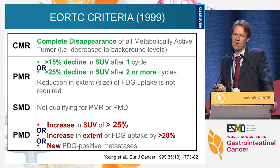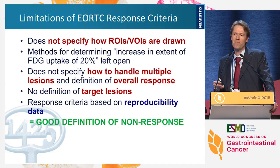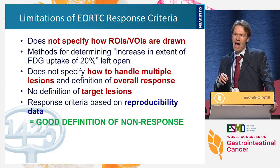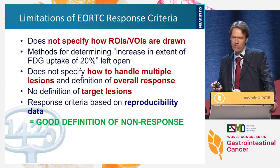Limitations of EORTC criteria include no specifications on how to make your ROIs or volumes of interest, no guidance on handling multiple lesions or defining target lesions. However, if you don't have changes of at least 15 or 25 percent, there is a good chance that therapy is not really affecting the tumor.